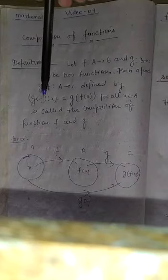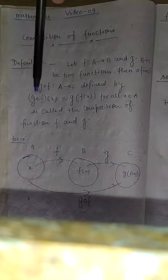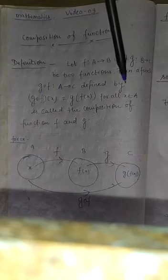(g∘f)(x) = g(f(x)) for all x belongs to A is called the composition of functions f and g.